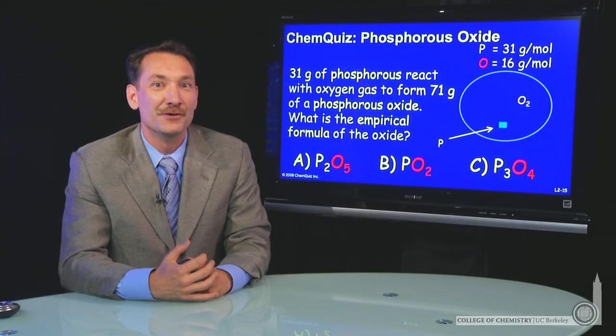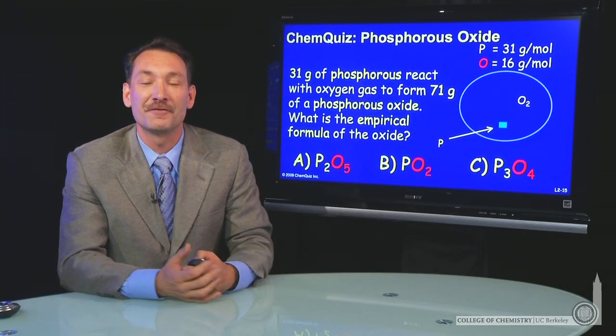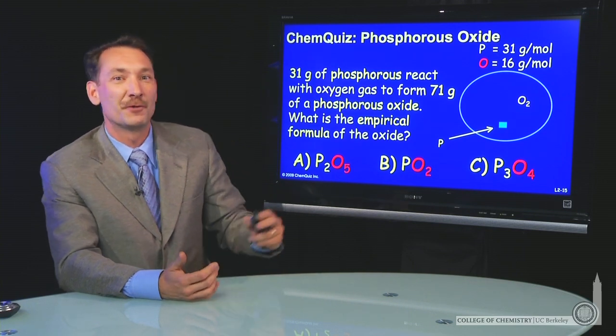When you react phosphorus with oxygen, you get a brilliant white light and the production of a phosphorus oxide. Let's look at that in terms of a chem quiz.